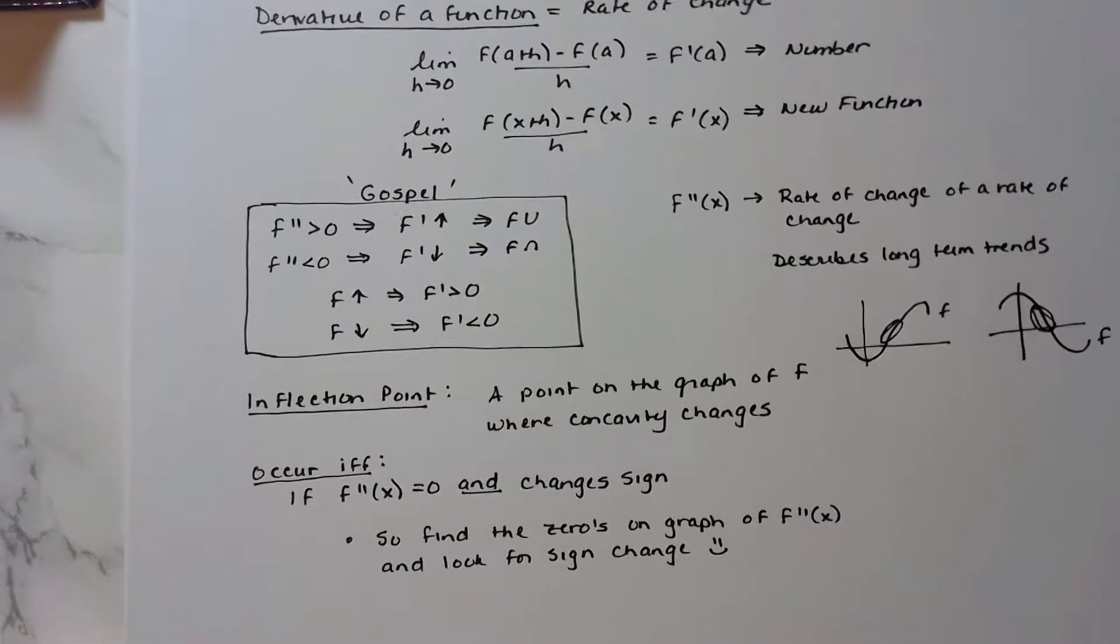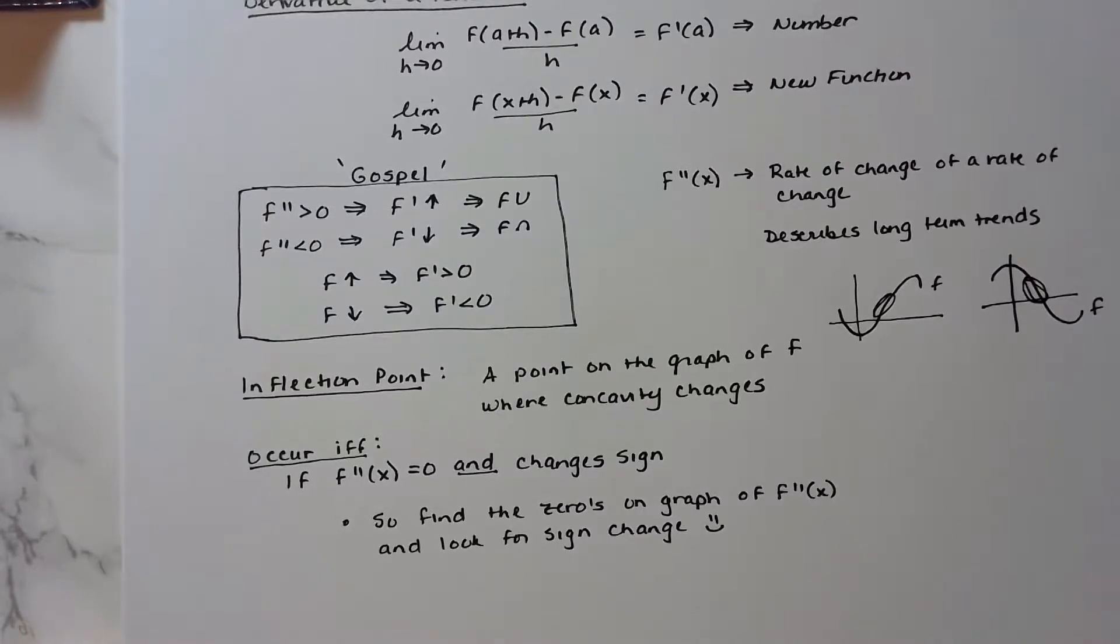The second derivative is important because it tells us when the concavity changes. Once we learn how to find second derivatives, we can find exactly the x value for which the concavity of a function changes. The only criterion that you need to know is that points of inflection occur if and only if—so this is a very strong message here—if and only if the second derivative equals zero and changes sign. When you're looking at a graph of a second derivative, what you're looking for is the zeros of the graph, and you want to see whether or not the zeros change sign.